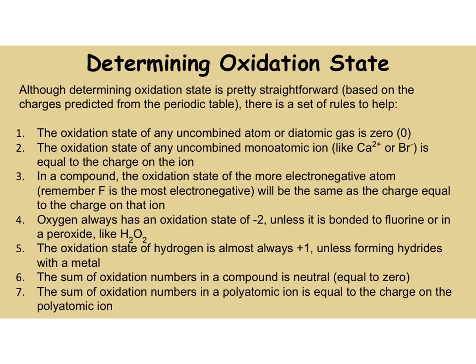That was a very brief and easy example. There are a set of rules that will help you. The first thing — and you have to go in order when doing this — if you see any uncombined atom or diatomic gas, the charge on their oxidation state is automatically zero. So if I give you Fe, don't scramble searching the periodic table looking for iron. As long as I don't tell you the charge, that atom all alone is zero.